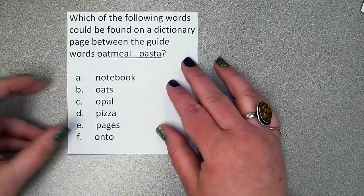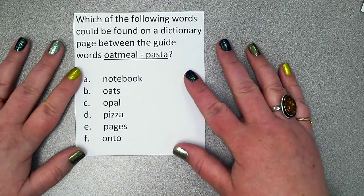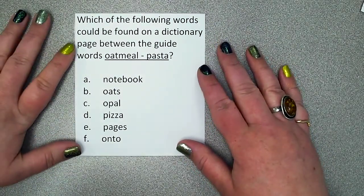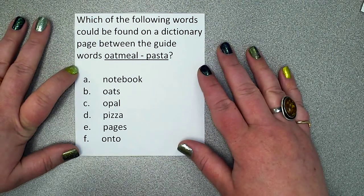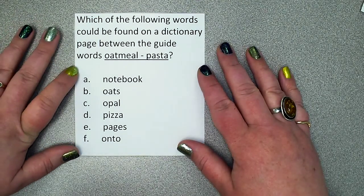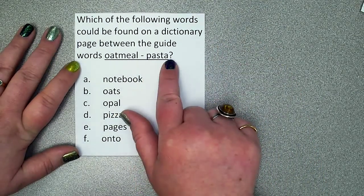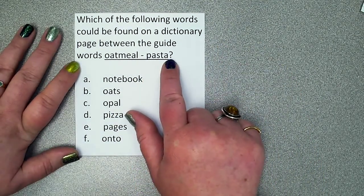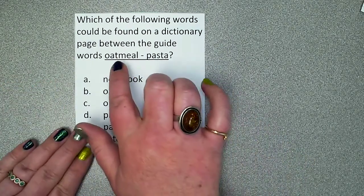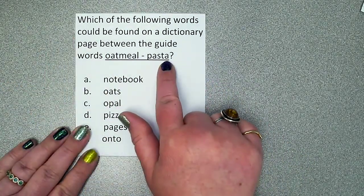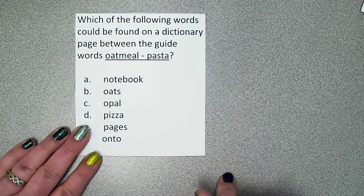There are two kinds of guide word questions you could be asked, and we're going to practice the first kind today. Here's the first kind: 'Which of the following words could be found on a dictionary page between the guide words oatmeal and pasta?' So if we were talking about a real dictionary, 'oatmeal' would be the first word on the page and 'pasta' would be the last word on the page.